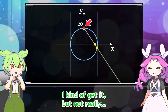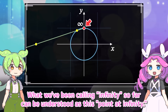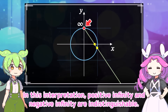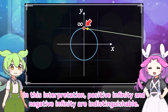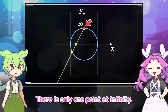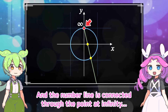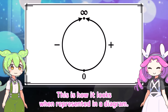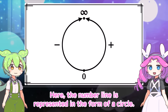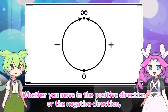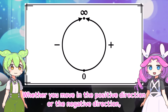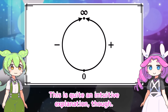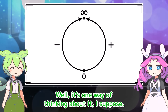What we've been calling infinity so far can be understood as this point at infinity. In this interpretation, positive infinity and negative infinity are indistinguishable — there is only one point at infinity. The number line is connected through the point at infinity. The number line is represented in the form of a circle; whether you move in the positive or negative direction, you can approach the point at infinity.